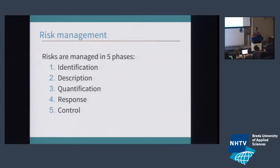We do this risk management in five phases. We identify risks — we give them a name, call out what they are, describe them in detail. We attempt to quantify them in some way so we can prioritize. We're going to have different response strategies. And then we might need to control the management of it and monitor it as time goes along.